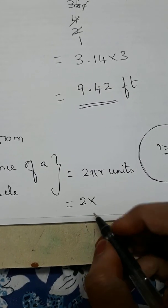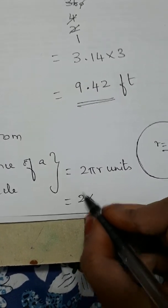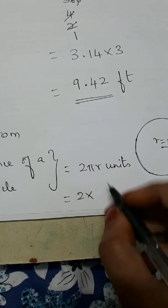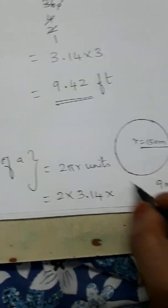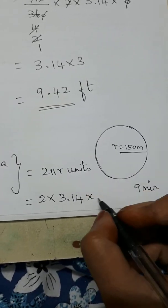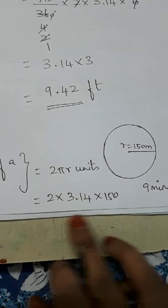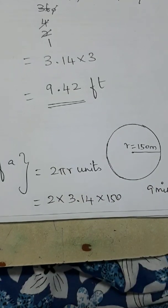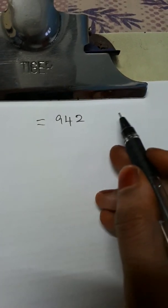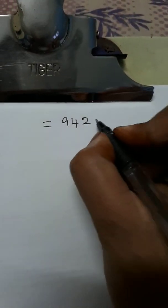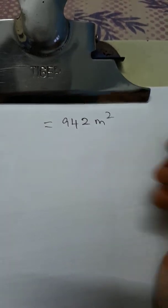We substitute: 2 × 3.14 × 150. Multiplying these values gives us 942.00 meters. So the circumference is 942 meters — that is the full track covered in 9 minutes.